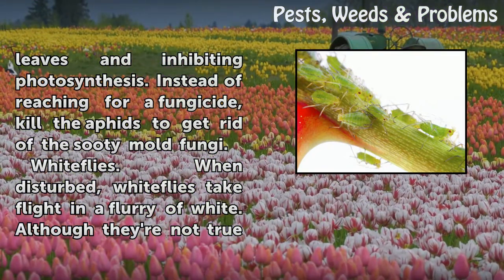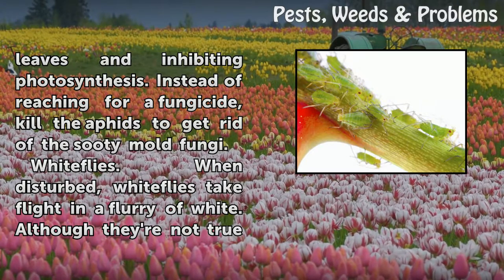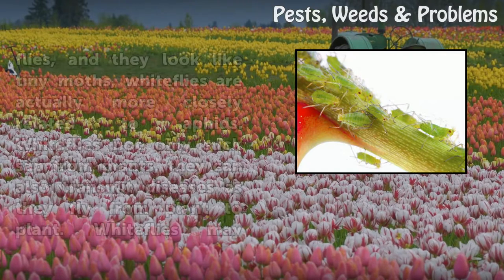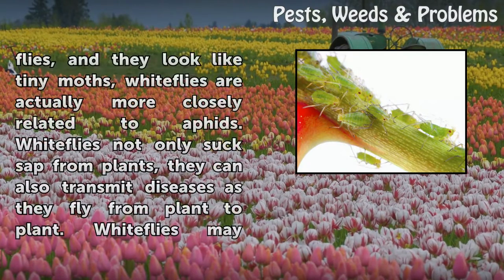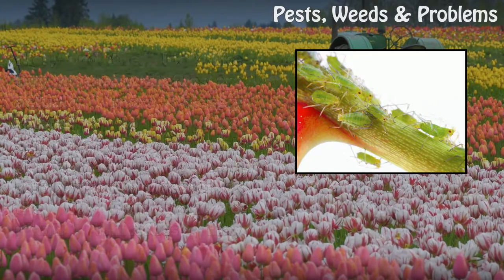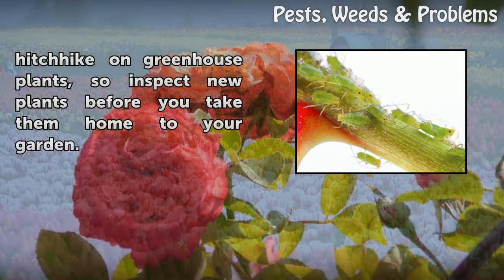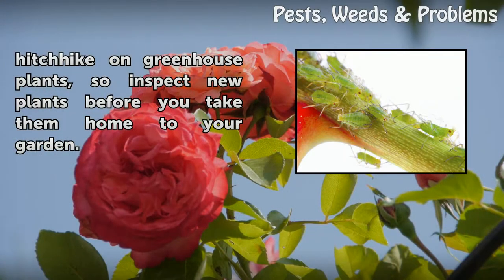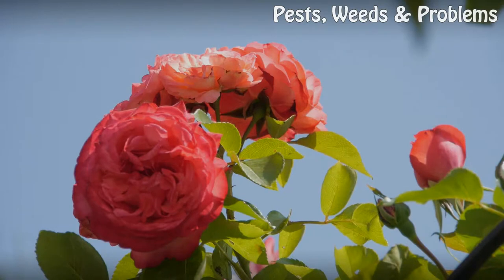White flies: when disturbed, white flies take flight in a flurry of white. Although they're not true flies and they look like tiny moths, white flies are actually more closely related to aphids. White flies not only suck sap from plants, they can also transmit diseases as they fly from plant to plant. White flies may hitchhike on greenhouse plants, so inspect new plants before you take them home to your garden.